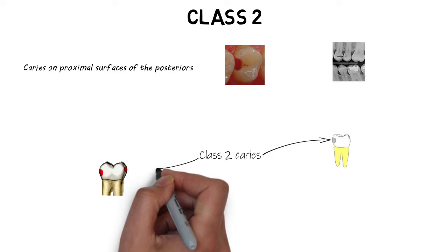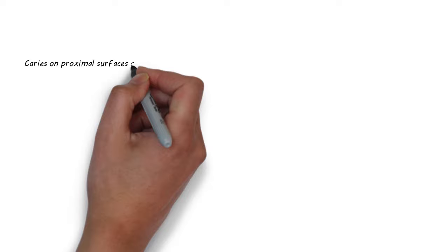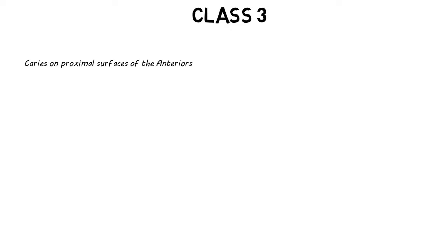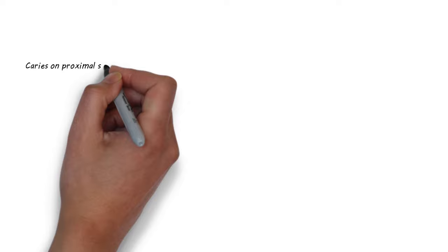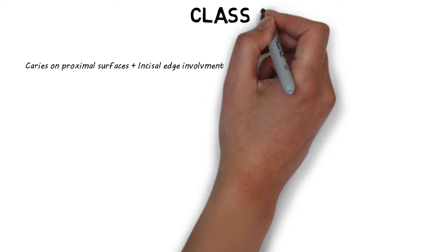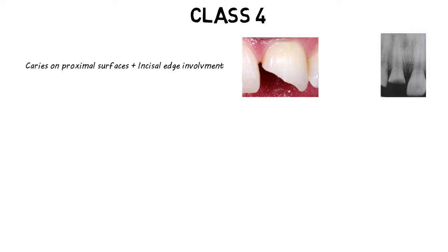When a lesion occurs on the proximal surfaces of the anterior teeth, it is included in Class 3 lesions. Class 3 basically includes caries lesions that occur on the proximal surfaces of the anterior teeth, whether an incisor or a canine. However, this lesion is only on the proximal surfaces and does not involve the incisal edges.